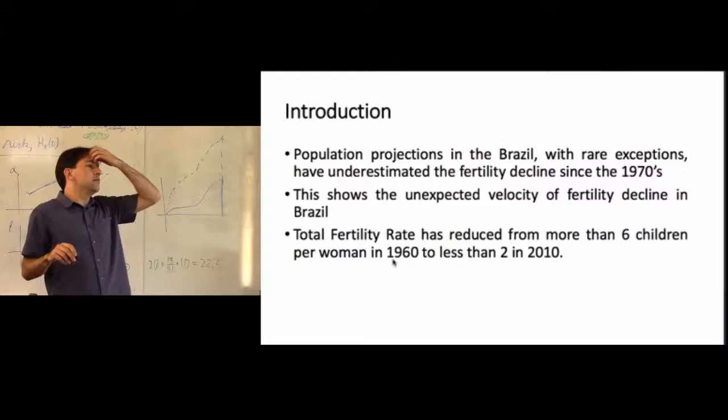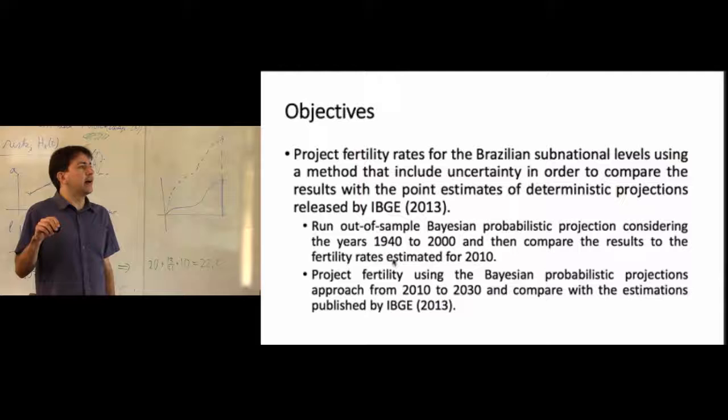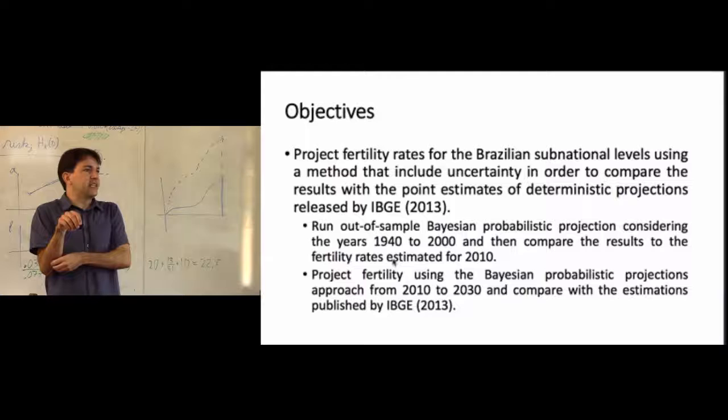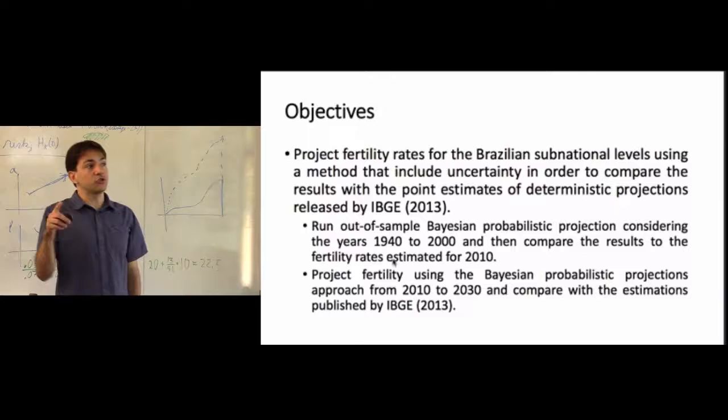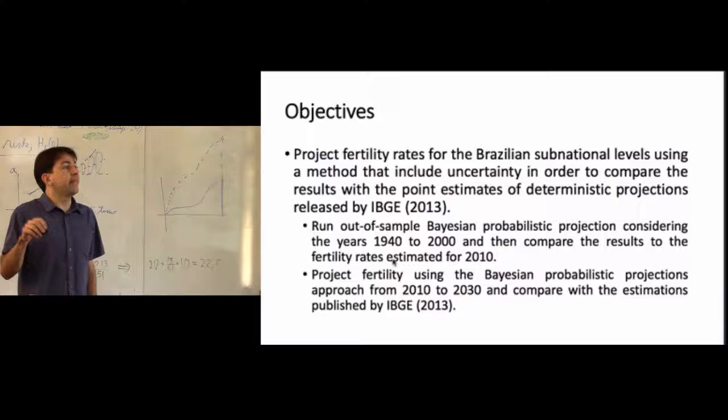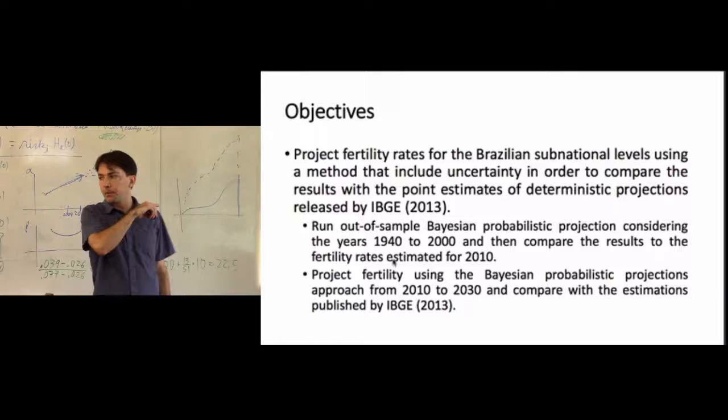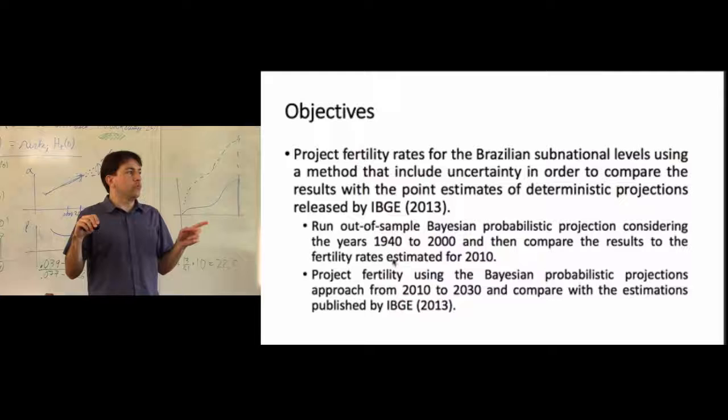The main purpose of this paper is to run a Bayesian probabilistic projection for fertility — essentially the method used by the United Nations for fertility projections for other countries — and then compare these results with the deterministic projections from the last population projections. I ran an out-of-sample projection considering the years 1940 to 2010 to compare results at 2010, and also a projection using the most recent information.